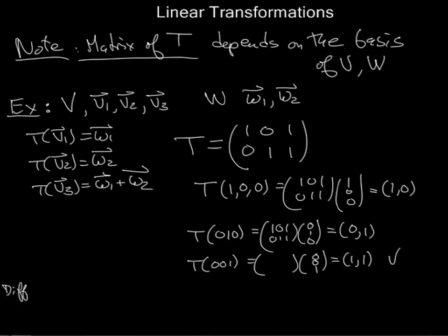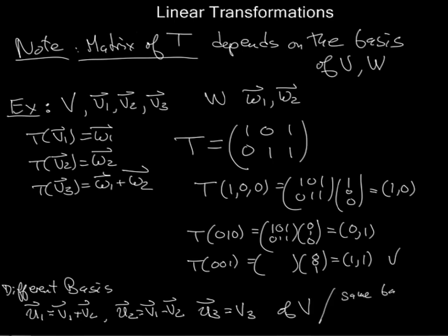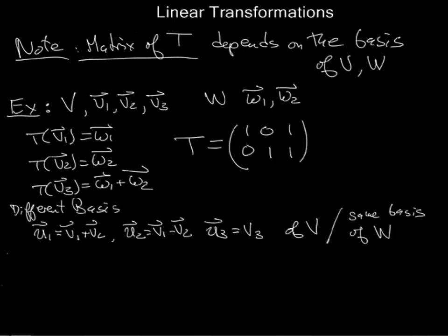Okay, that's fine. But what happens if we chose a different basis? I want to see how T changes. Suppose I chose a new basis U1 and U2 where U1 and U2 were V1 plus V2 and V1 minus V2, and then I just chose U3 to be V3. So I changed the basis of V but left the basis of W the same. What effect does that have on the matrix?